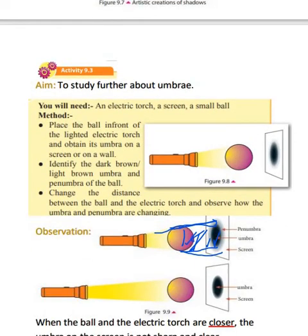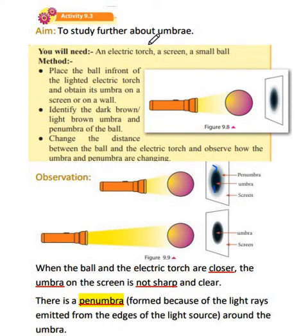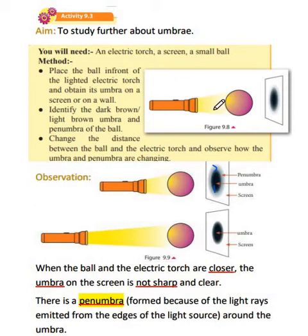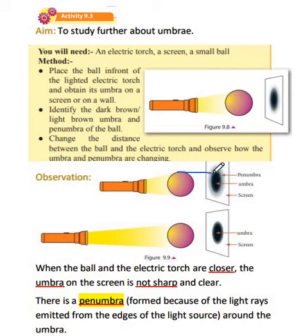Now let us go on to the next activity. Here we are going to need an electric torch, a screen, and a small ball. We are going to place the ball and the screen on a table and place the electric torch in front of the ball. First, we place the torch a little close to the ball, then start to move it away. When you keep the torch close to the ball while it's on, you can see there is a dark spot — that is the umbra, directly representing the opaque part of the ball.